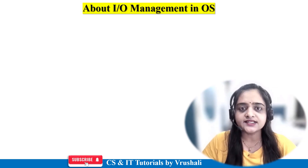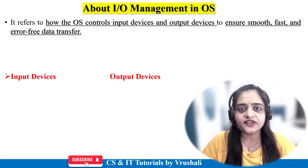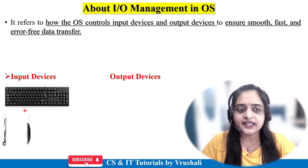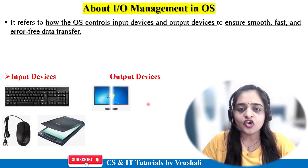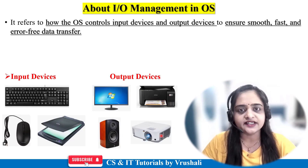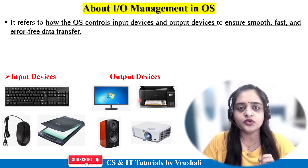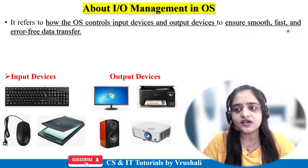The first question is: what exactly is IO management in operating system? IO means input-output management. We are all familiar with the different input and output devices connected to our system — input devices like keyboard, mouse, scanner; output devices like monitor, printer, speaker, projector. It is the responsibility of the operating system to control all these input and output devices and ensure smooth, fast, and error-free data transfer between the system.